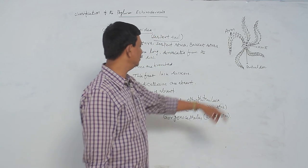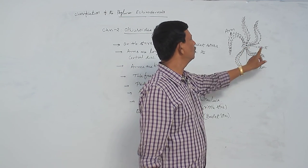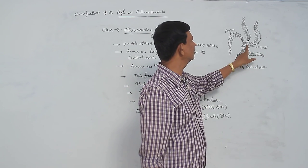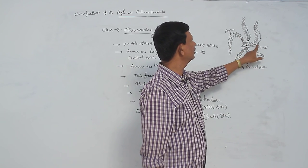This is the diagram of the Ophiothrix. Here you can see in the central disc in the middle, mouth is present. This is the central disc. This is the mouth. Arms and spines are also present. These are the spines.